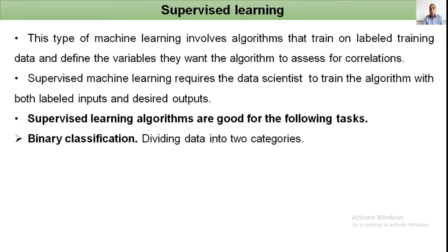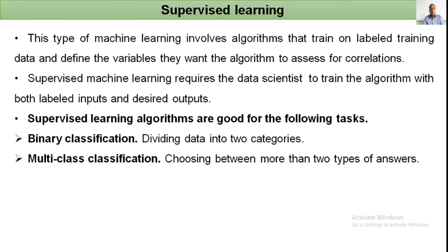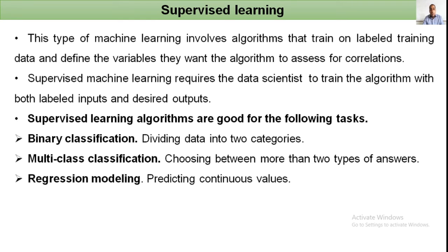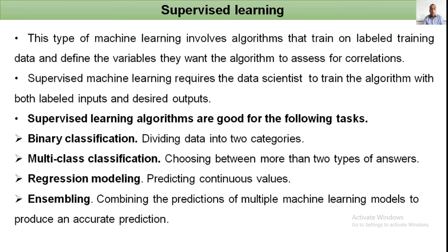Supervised learning is also used for multi-class classification — choosing between more than two types of answers when more than two classes are available. Regression modeling predicts continuous values; regression relates to correlation, which is the extent of linear relationship between two variables. Using one variable, we predict the other. Ensembling combines the predictions of multiple machine learning models to produce an accurate prediction.